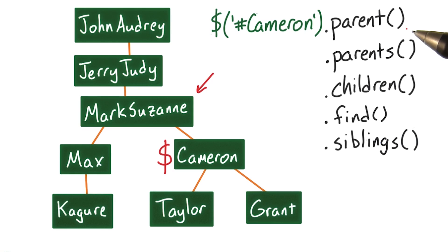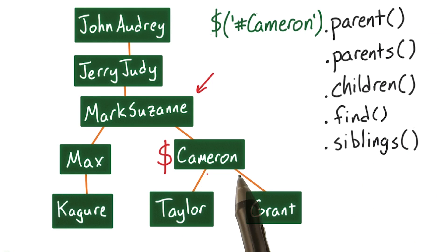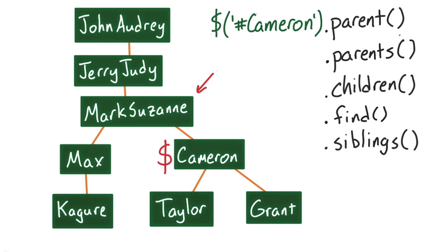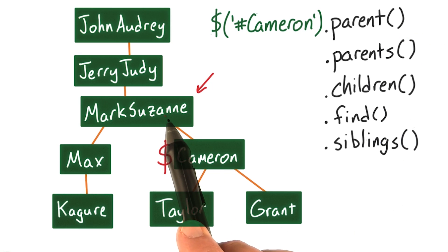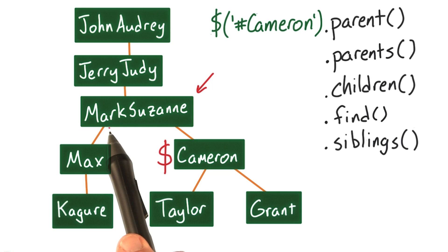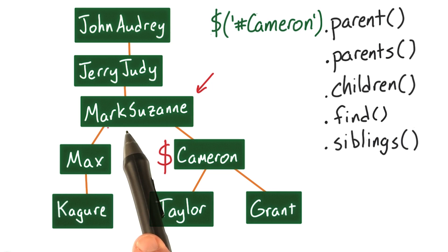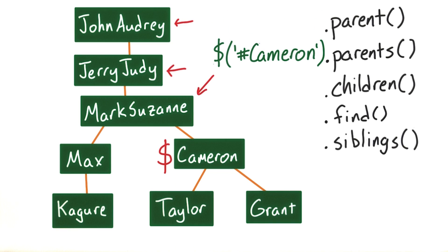I'll start with .parent. If I've selected the node with the ID Cameron, I can select my immediate parent by calling .parent. .parent goes up the DOM one level, so at this point I've selected the element with the ID MarkSuzanne.